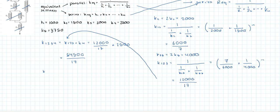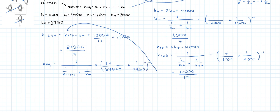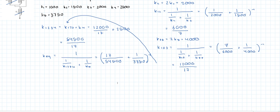So take the inverse again. We'll call it K_equivalent, and that's going to be (1/K_1234 + 1/K_5)^(-1). That is equal to (17/54500 + 1/3750)^(-1), and from there you should get 817500/473.